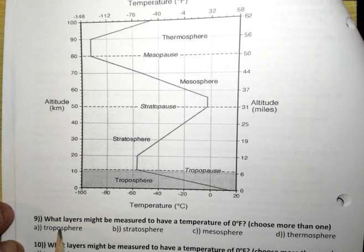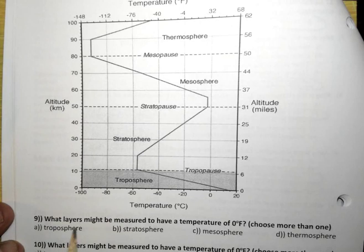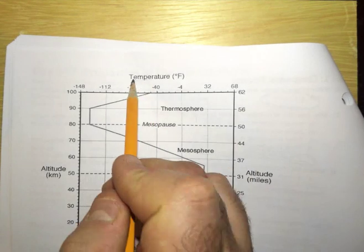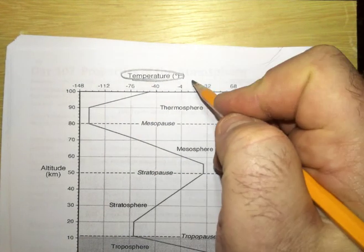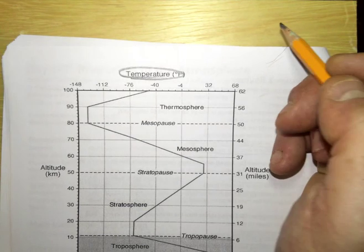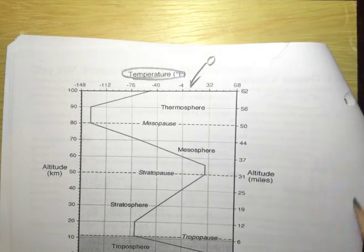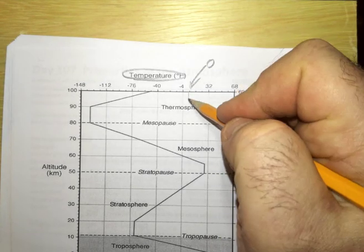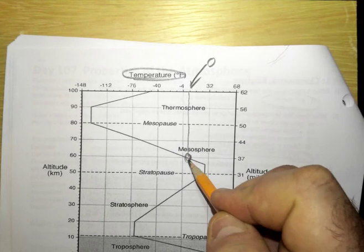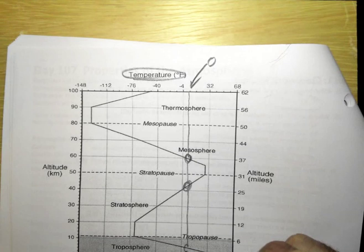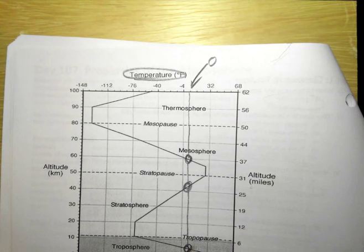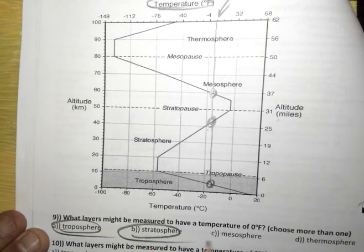We're just going to analyze it a little bit differently. Finally, what layers might be measured to have a temperature of zero degrees Fahrenheit? So Fahrenheit temperatures are on the top. So we need to find the zero. Where would the zero mark be on the axis there? You should be thinking about that spot right about there. So as we go down the graph, we have the zero on that part of the line, and on that part of the line, and there. Three times the atmosphere can have zero Fahrenheit. That's going to be in the troposphere, stratosphere, and mesosphere. All three of those get circled.